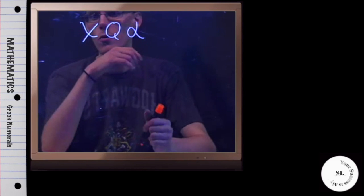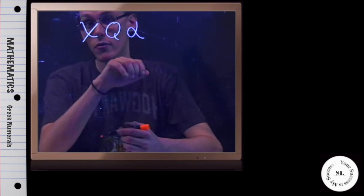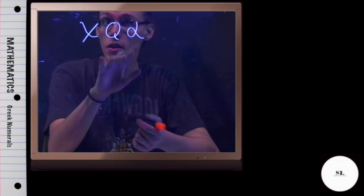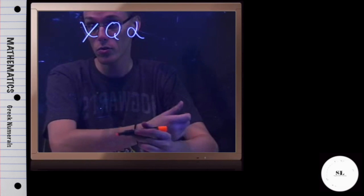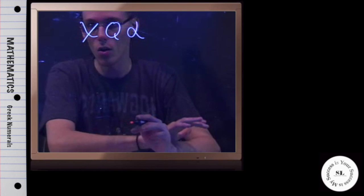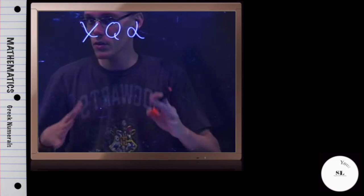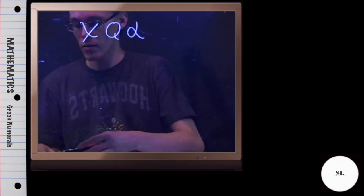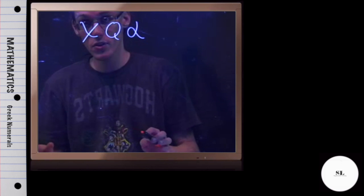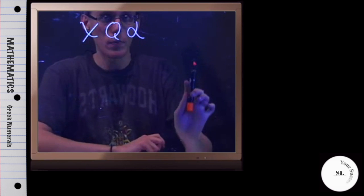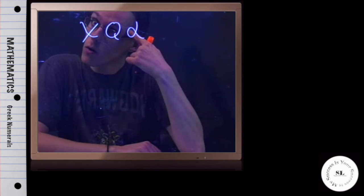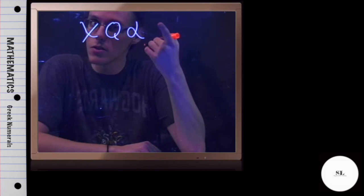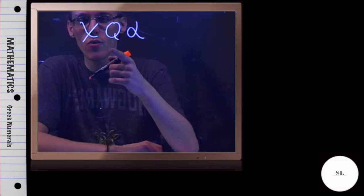Alright, now in this example we're going to be converting the following Ionic Greek numeral into Hindu-Arabic numerals, the ones you're more used to, the ones we use all the time. Now, the Greek system can seem a little clunky because they have a completely different symbol for every number, basically. But once you know what number the symbols represent, it's pretty straightforward.